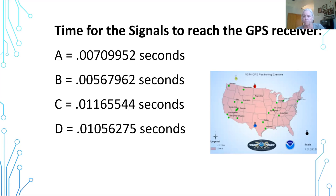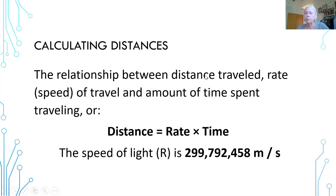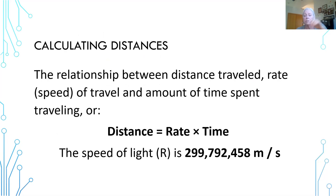This is the time it takes from the satellite to Sadie. We've got to calculate the distance, and that is the relationship between the distance traveled, the rate — which is the speed of light — and the amount of time spent traveling. The distance between that satellite and Sadie is the rate (speed of light) times the time, and that time was given to you in seconds.